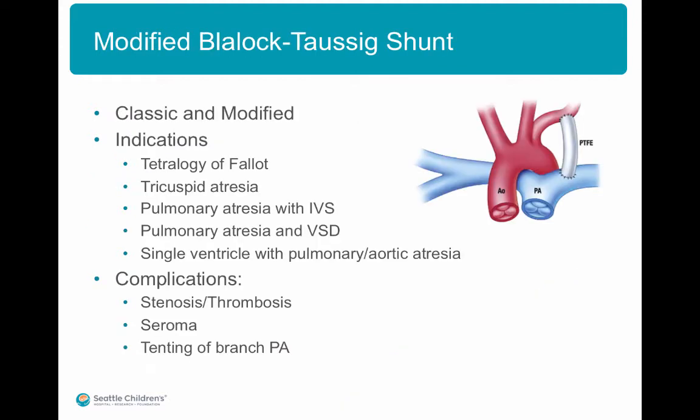The Blalock-Taussig shunt was classically designed as an anastomosis between the subclavian artery and the ipsilateral branch pulmonary artery. Currently, an artificial conduit made of polytetrafluoroethylene is used to connect the subclavian artery to the branch pulmonary artery, which spares the subclavian artery and works perfectly well.